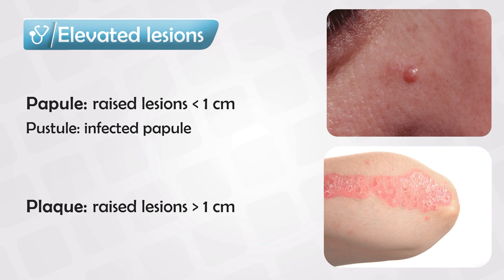So to put it simply, raised lesions that are small are known as papules, and raised lesions that are large are known as plaques.